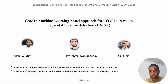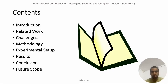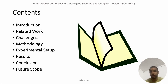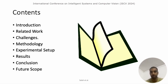My co-authors are Salabhaktiv and Arioni. This will be the contents of today's talk. I will start with the introduction about suicidal ideation and the role of machine learning in identifying suicidal ideation from social media. Then I will focus on related work, the challenges we faced, the proposed methodology, the experimental setup, results, conclusions, and future directions.